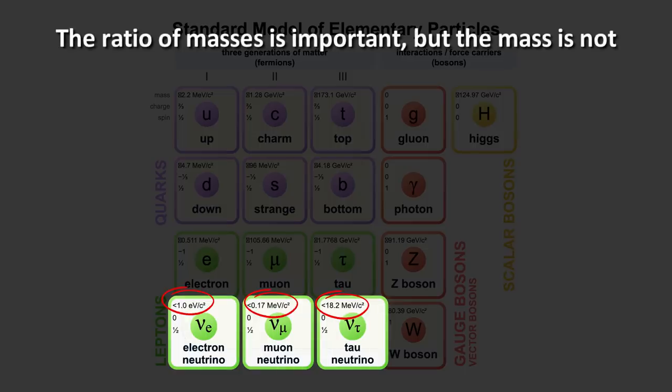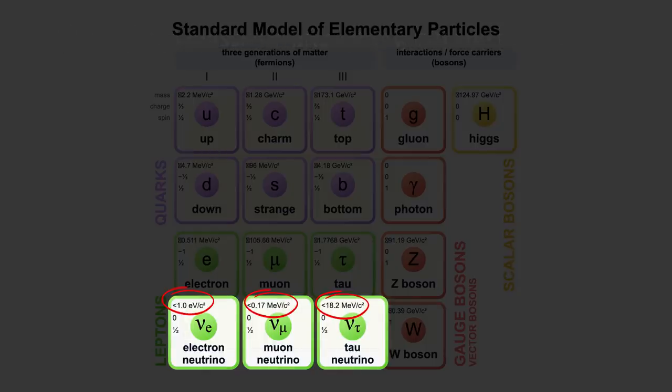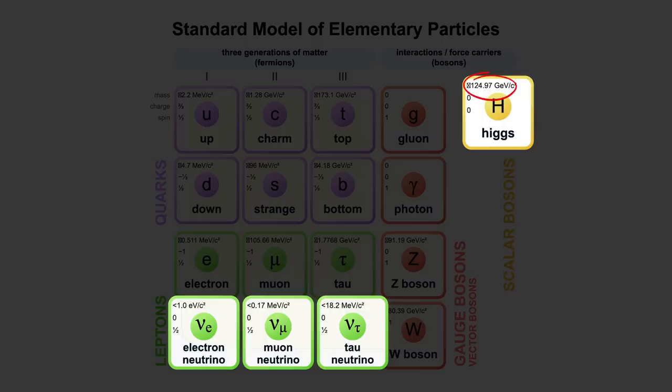And the ratio of the masses of the three different neutrinos, electron, muon, and tau neutrinos is important, but the precise number that the mass takes does not seem to make a difference. So the mass of the neutrino appears to be arbitrary, which is really the opposite of fine tuning. The same thing applies for some other masses, such as the mass of the Higgs boson, which also appears to be somewhat arbitrary.